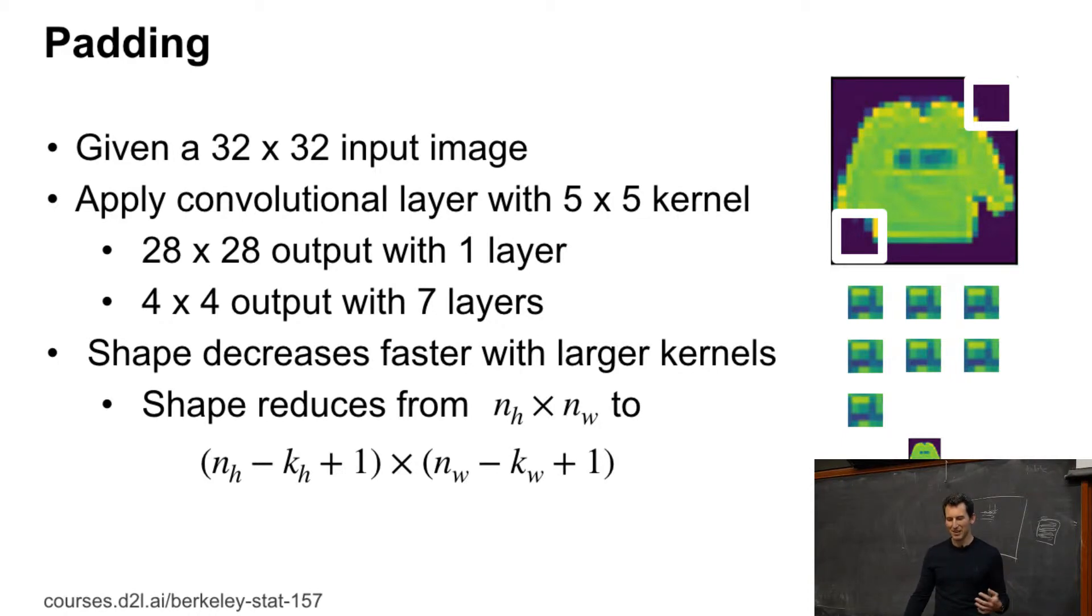And if your convolutional kernel is large, this goes very quickly. So if you look at it, we have image height minus kernel height plus 1, same thing for the width.